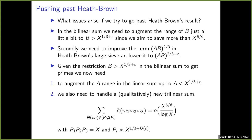To improve on Heath-Brown's result, there are two major issues. First, we need a bigger saving in the bilinear sum, requiring B > x^{1/3+ε}. Second, we need to improve the AB^{2/3} term in Heath-Brown's large sieve to AB^{2/3−ε}. Since in the bilinear sum B must be bigger than x^{1/3+ε}, we also need to handle a qualitatively new kind of sum: a trilinear sum with three primes each of size roughly x^{1/3}.